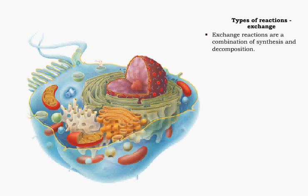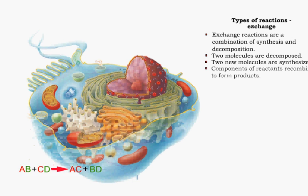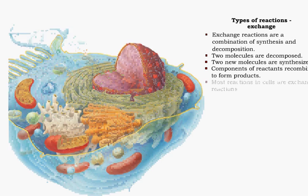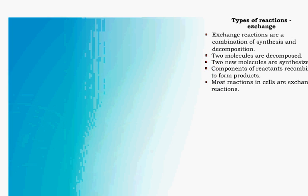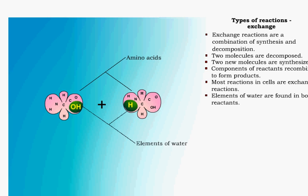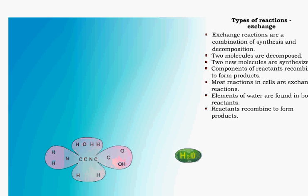An exchange reaction is a combination of synthesis and decomposition. Two molecules are decomposed and two new molecules are synthesized. The components of the reactants recombine to form the products. Most reactions in the cell are exchange reactions, even though they may appear to be decomposition or synthesis reactions. For example, the synthesis of a dipeptide from two amino acids is really an exchange reaction because a recombination of the reactants has occurred in the formation of the products.